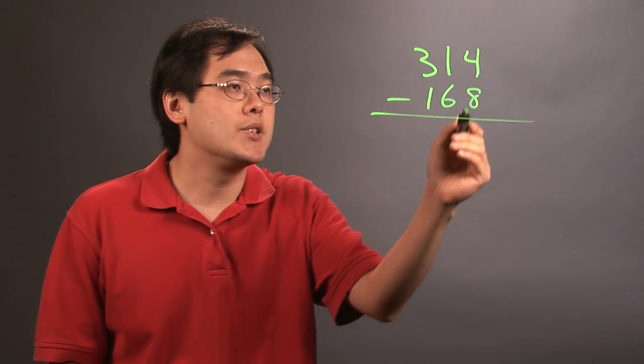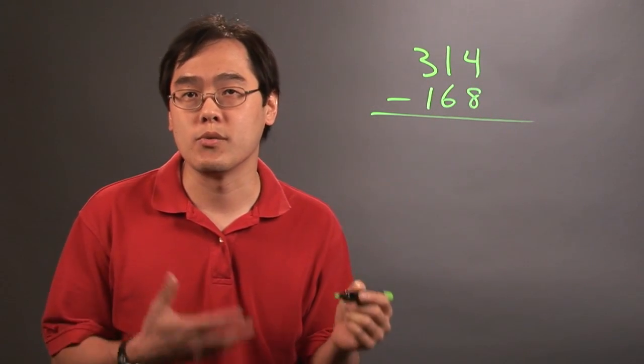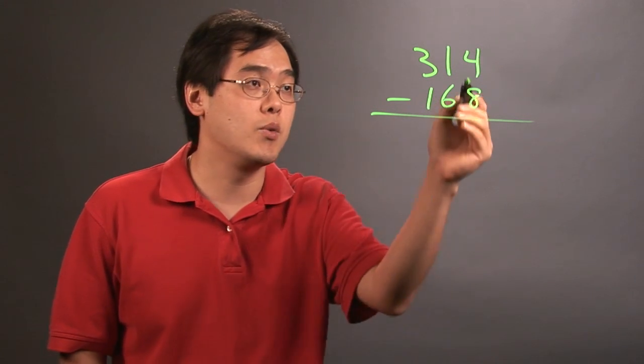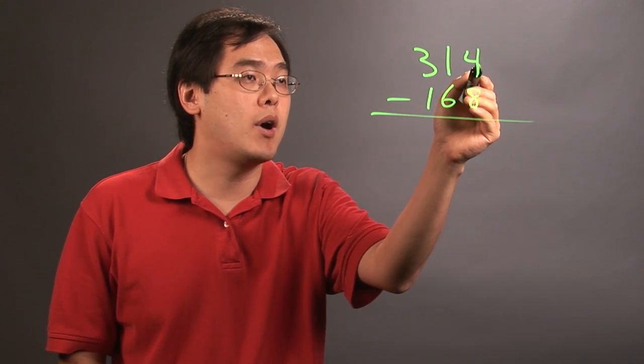the idea here is you cannot subtract 8 from 4. So what you have to do is when it comes to carrying, you have to borrow from the next digit over if possible. So what ends up happening is 4 is going to have to borrow from the 1.